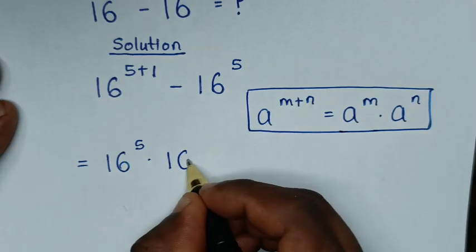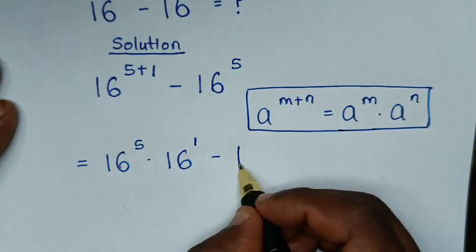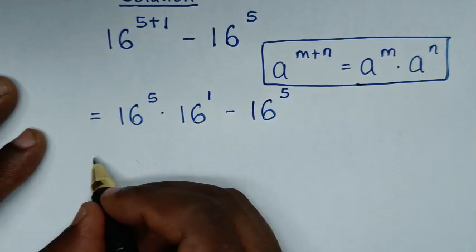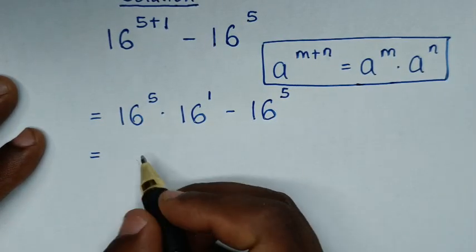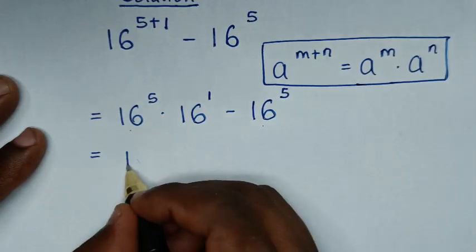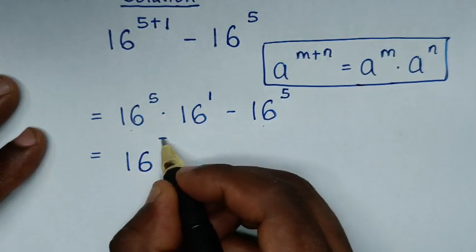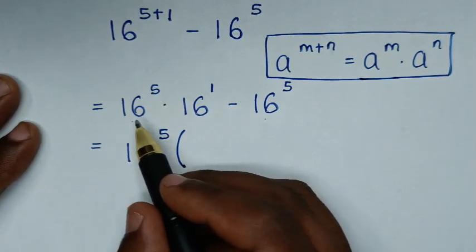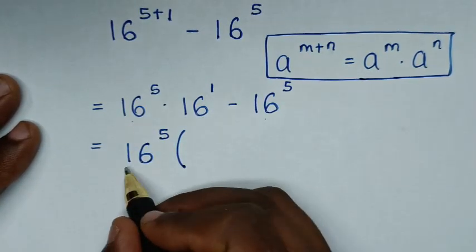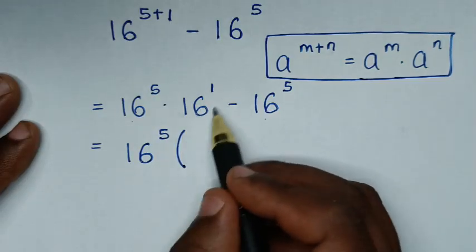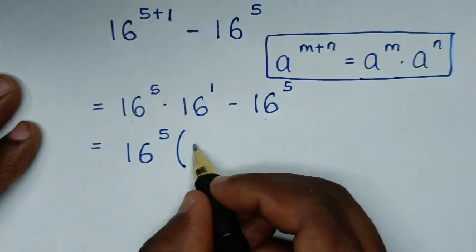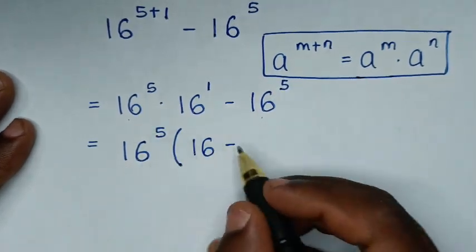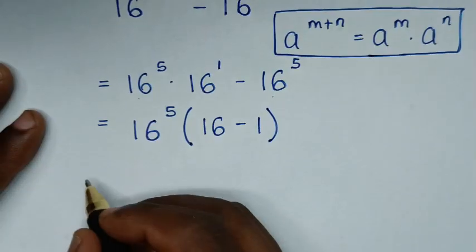So 16 power of 1, then minus 16 power of 5. In the next step, 16 power of 5 is common, so we will take 16 power of 5 out of the bracket: 16 power of 5 times 16 power of 1, which gives 16, then minus 1 in the bracket.